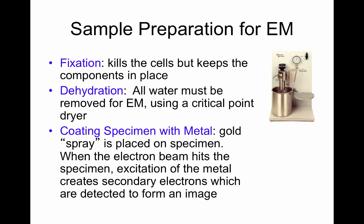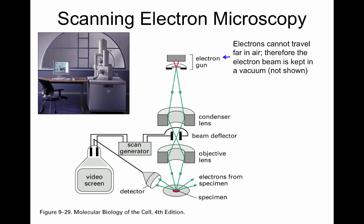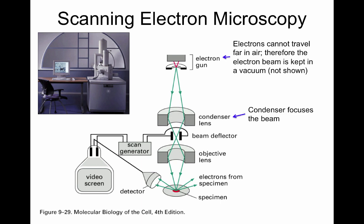Let's take a moment to look at the structure of the electron microscope. The electron microscope has many of the components that are shared with light microscopes. It has an electron gun, which is going to generate the electrons for illumination. Since electrons cannot travel in air, all the electrons and components of the electron microscope will be found in a vacuum, which is not shown in this image. The next component is going to be a condenser lens, which, just like in light microscopy, is going to help focus the beam in the microscope.